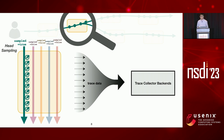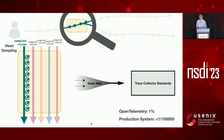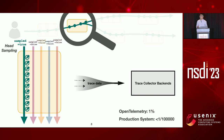With head sampling, the trace data amount can be reduced to achieve a trade-off. Such a sampling rate can be very low in practice. OpenTelemetry, the open-source state-of-the-art tracing framework used today, has a default sample rate of 1%. But in a production system at very large scale, such a sampling rate could be as low as 1 in 100,000.